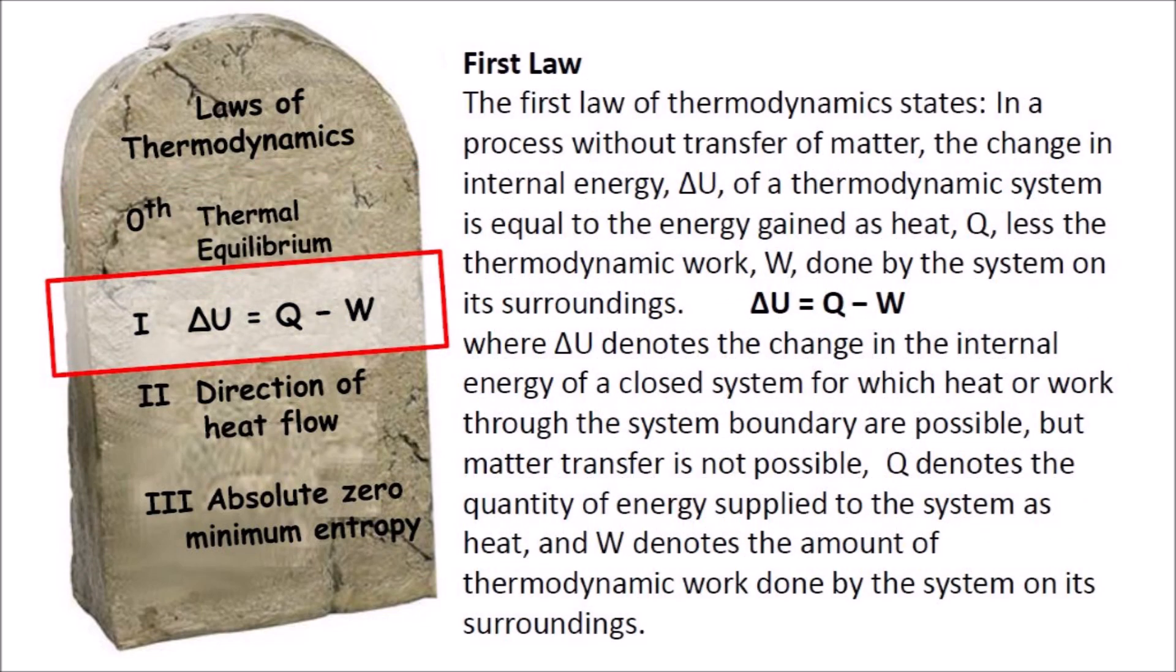The first law of thermodynamics states that in a process without transfer of matter, the change in internal energy, delta U, of a thermodynamic system is equal to the energy gained as heat, Q, less the thermodynamic work, W, done by the system on its surroundings. Delta U equals Q minus W, where delta U denotes the change in the internal energy of a closed system for which heat or work through the system boundary are possible, but matter transfer is not possible. Q denotes the quantity of energy supplied to the system as heat and W denotes the amount of thermodynamic work done by the system on its surroundings.